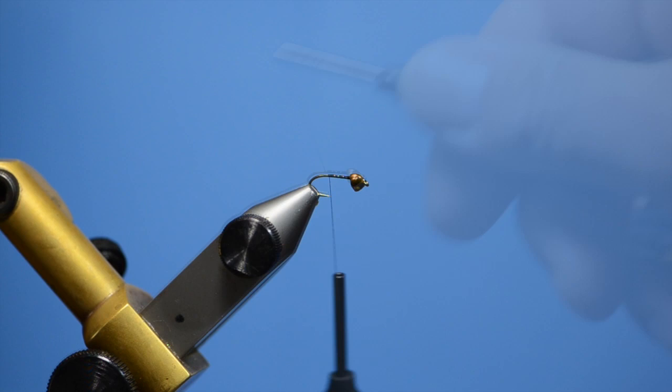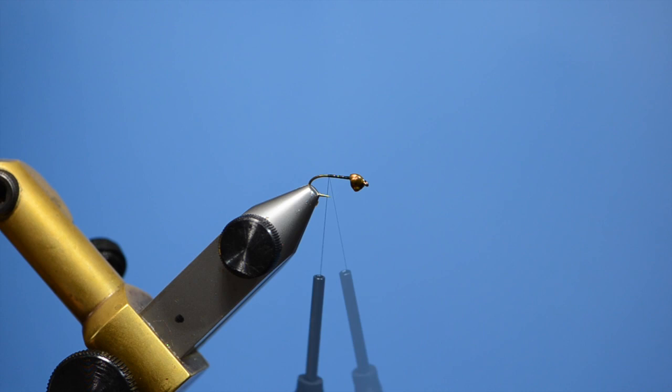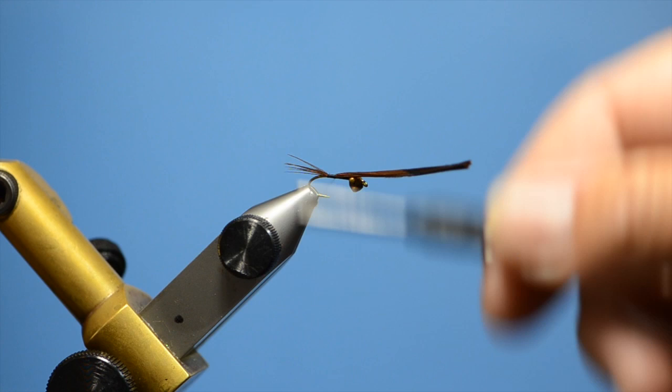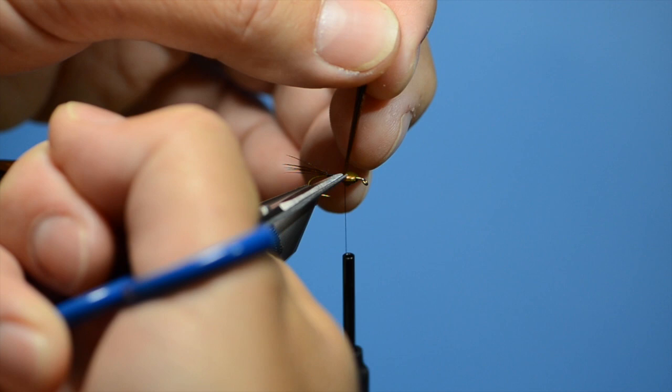The tail on this fly we are going to use some pheasant tail dyed brown. A few strands of that. I will tie this in for a tail about a gap width. I don't like my tails too thick on these. Just half a dozen strands at the most. I am just going to wrap up the shank and trim off the excess.